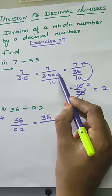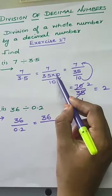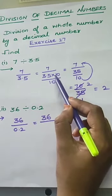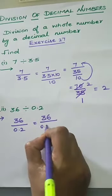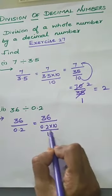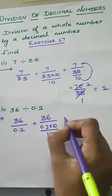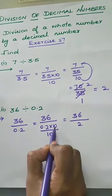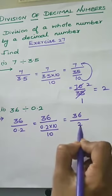We use 10 into 10 by 10 because our question has a decimal number and we want to remove the decimal point. So we multiply using 10, but we can't change the question, so we also divide by 10. So 0.2 into 10 by 10 — multiplying by 10 moves the decimal point one place to the right, giving us 2. So we have 36 divided by 2 divided by 10.